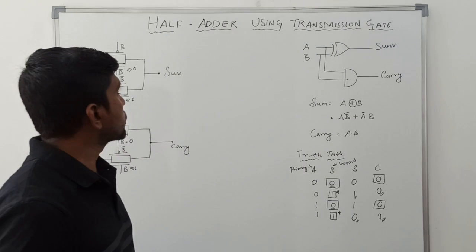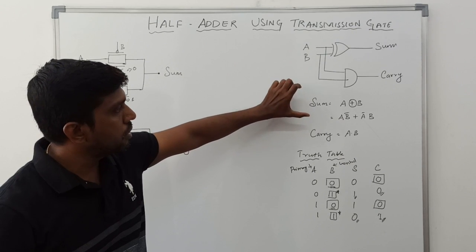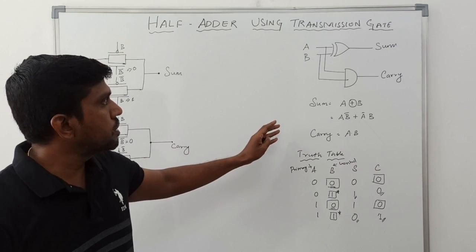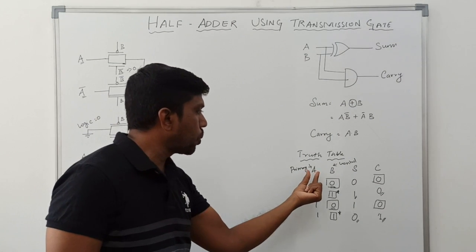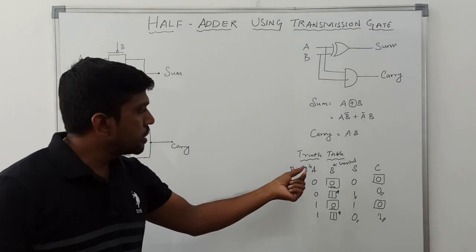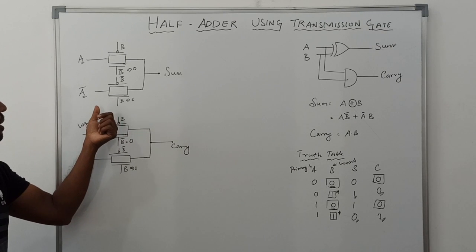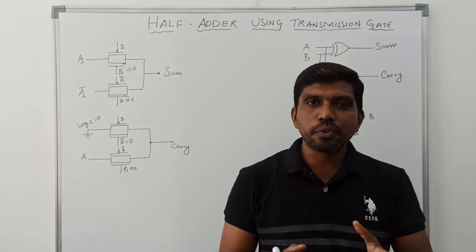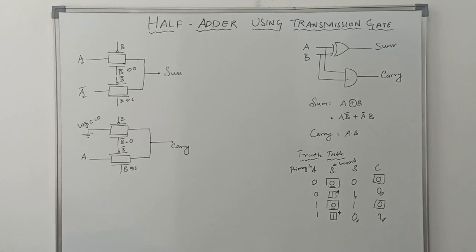So it's a simple structure of a half adder circuit using transmission gates. First you draw the logical diagram, then you write the expression for sum and carry, then you write the truth table. After that you convert this logic diagram into a transmission gate structure — one input is considered as primary input and another as controlling input. Here B is the controlling input and A is the primary input. I hope you understand the concept very well. If you are watching for the first time, kindly subscribe and support us. Thank you.